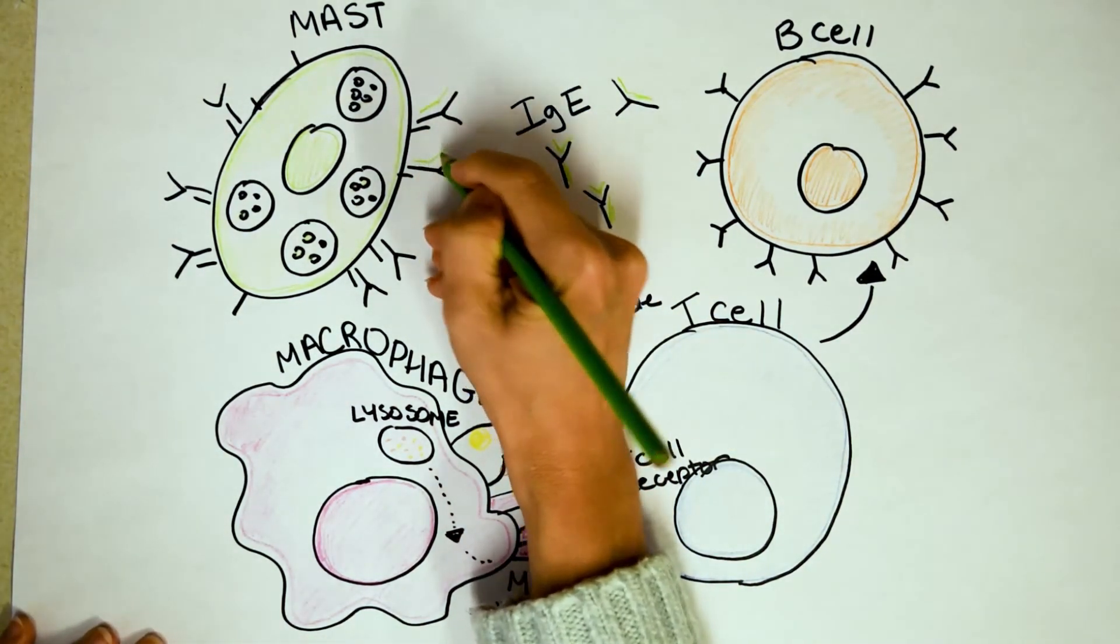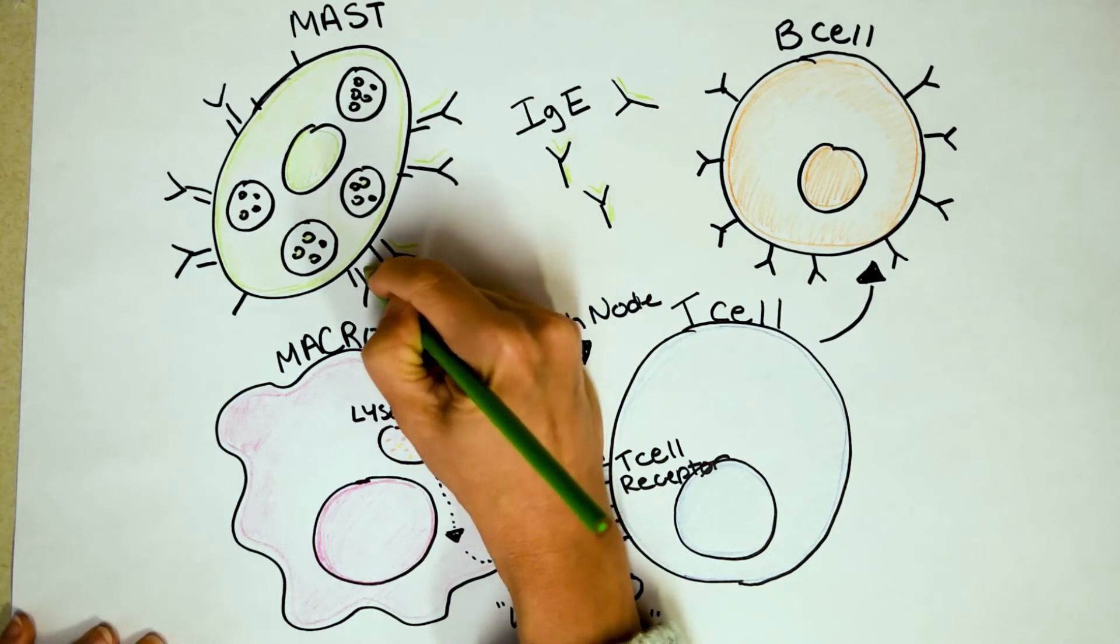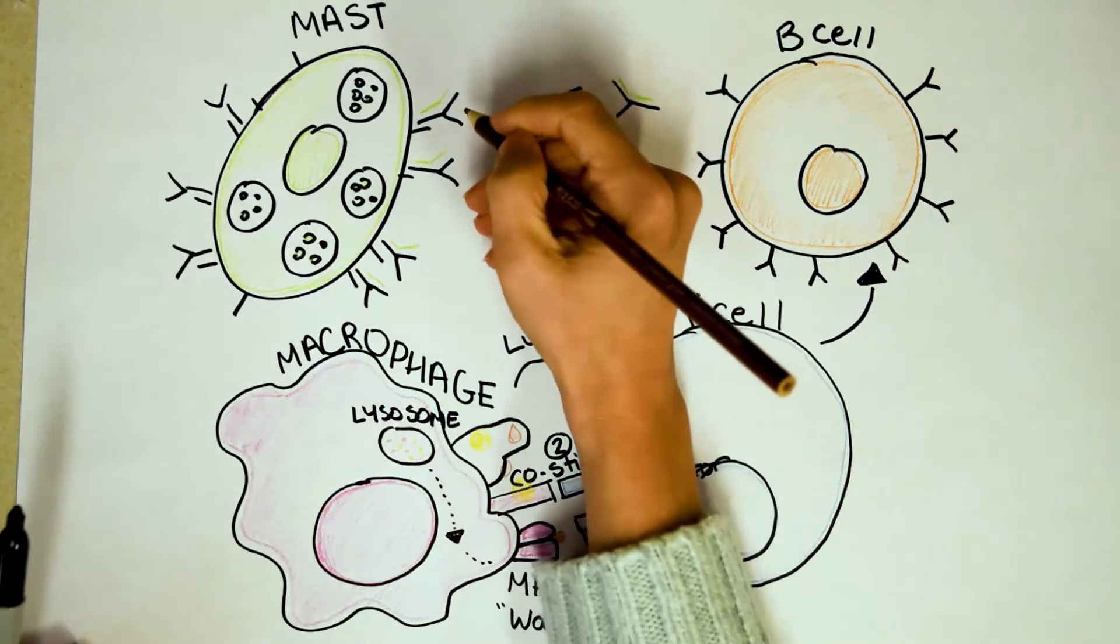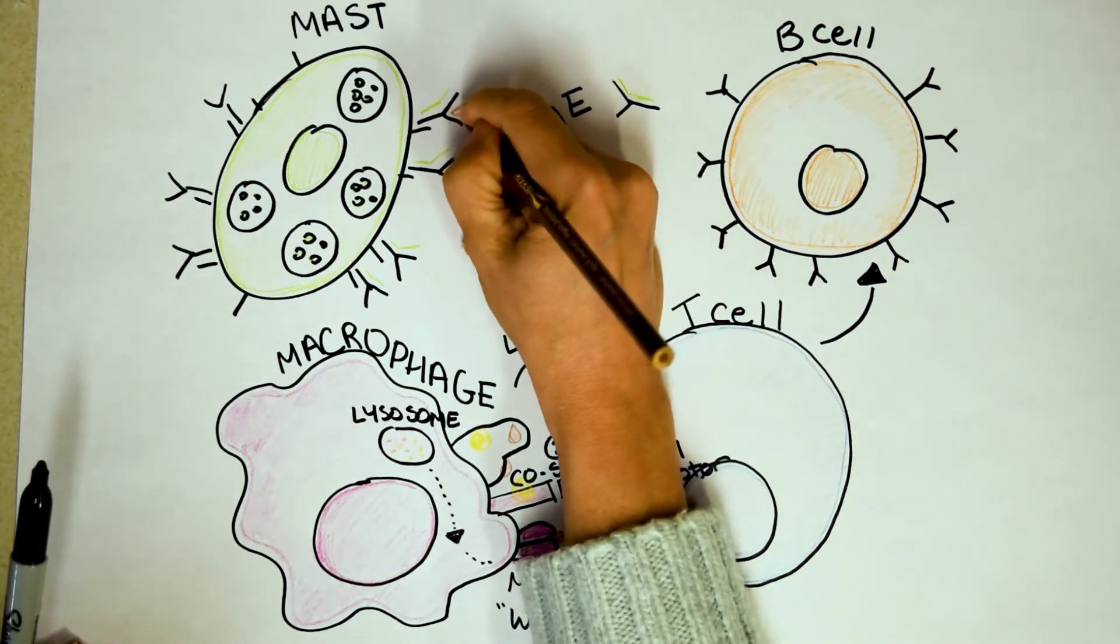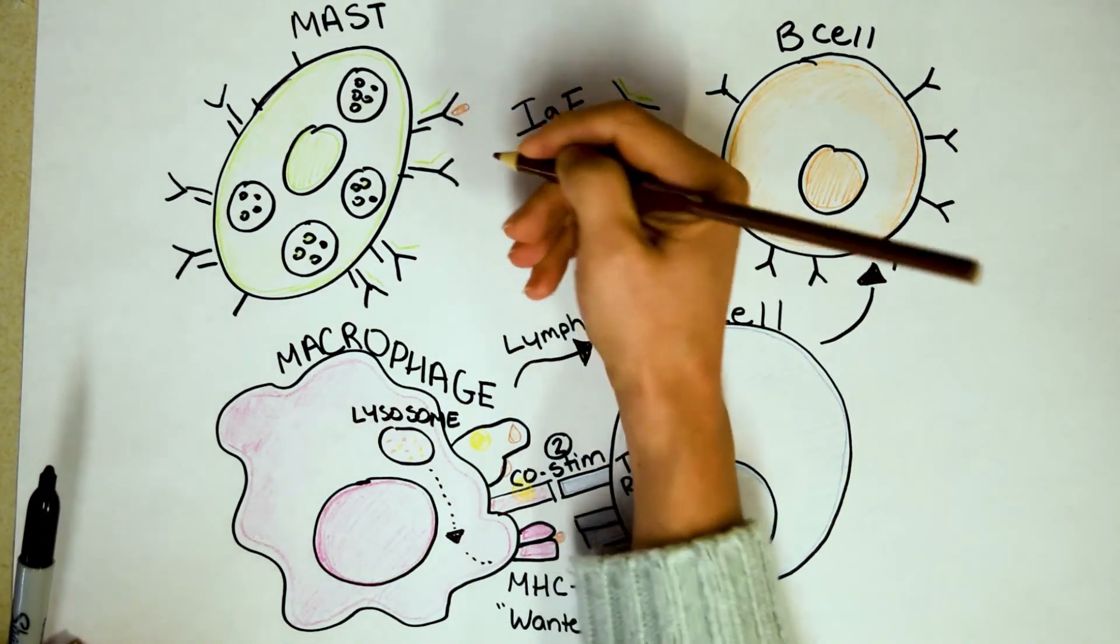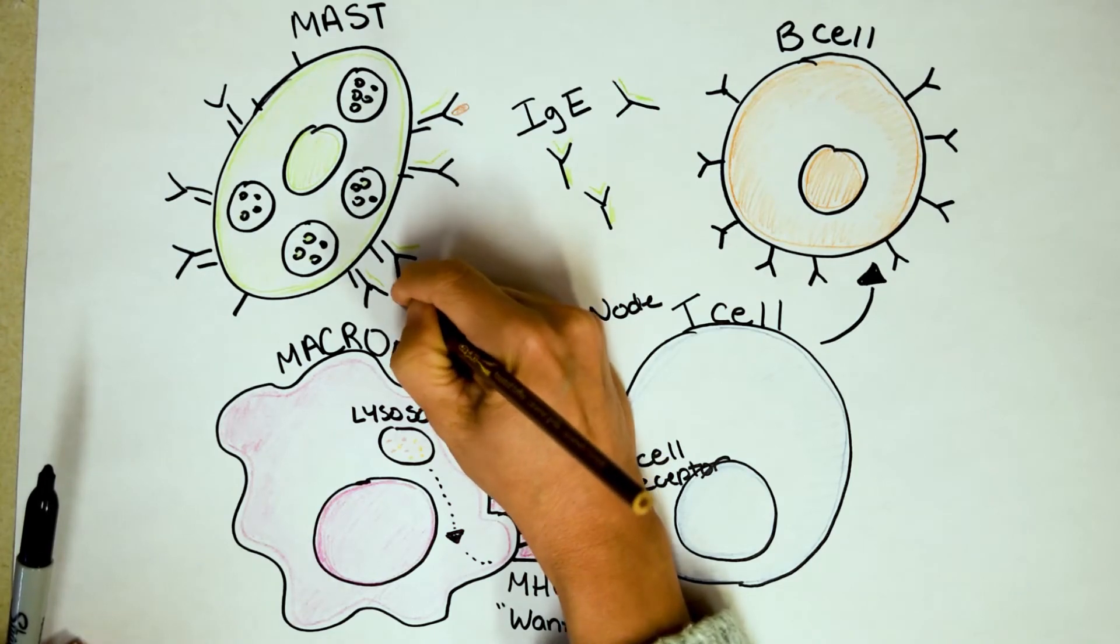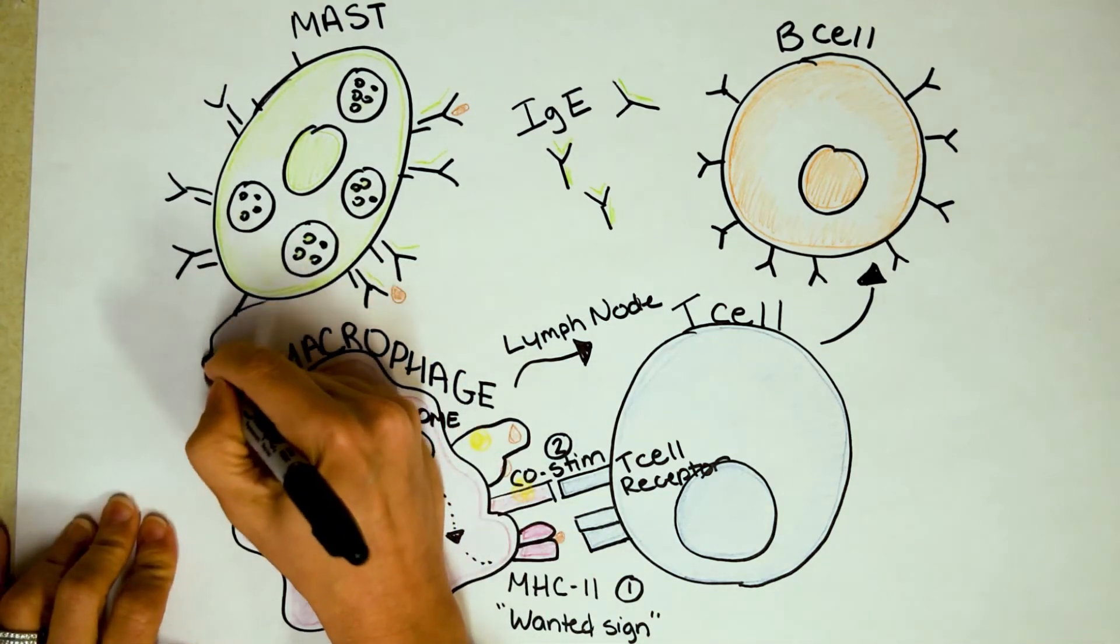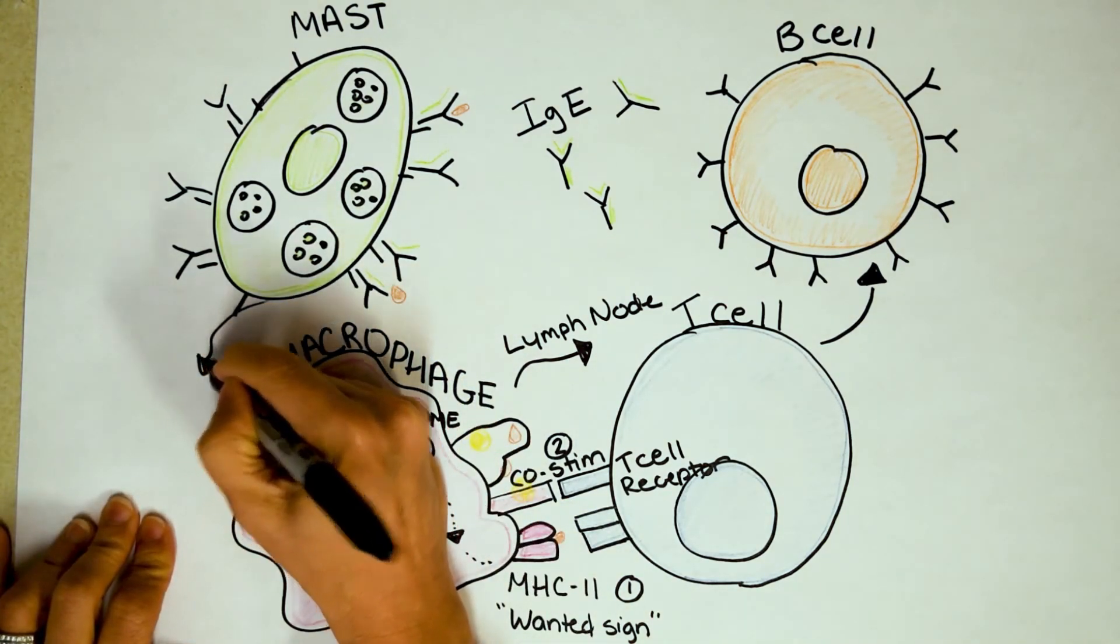So the next time, two weeks later, you remember how delicious that sesame bagel was, you go back and you eat another one. But this time, your body has mast cells ready, and they're going to bind to the sesame. And in fact, they actually have to cross-link, meaning two of the receptors have to bind the sesame at the same time. But now, it's histamine city. All of the histamines are going to dump out of this mast cell.